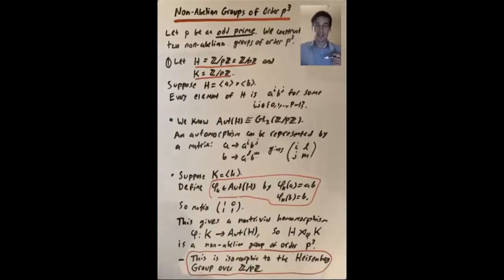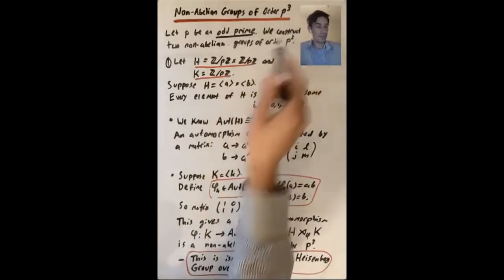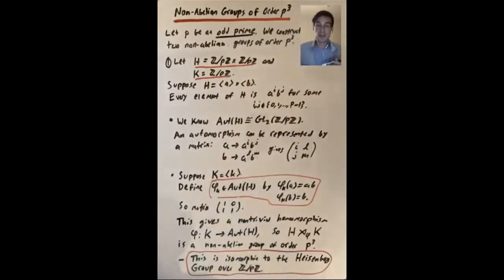What we're going to do is construct two non-abelian groups of order p cubed, and we'll see that they're not isomorphic to each other. So let's get into the first construction.